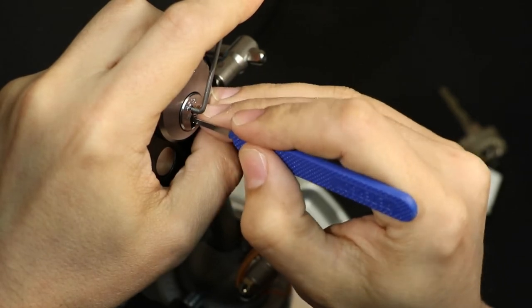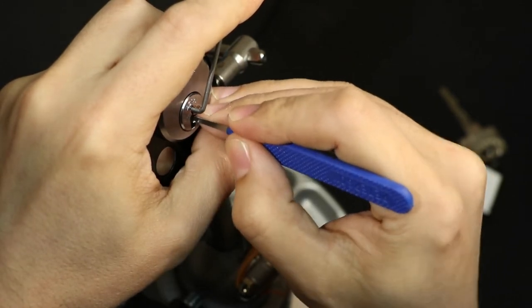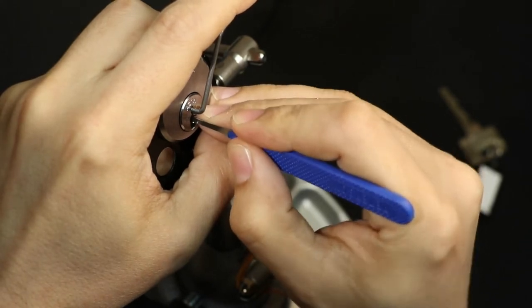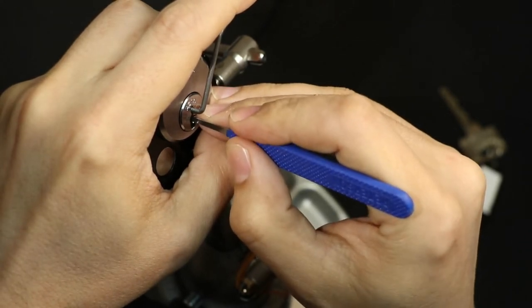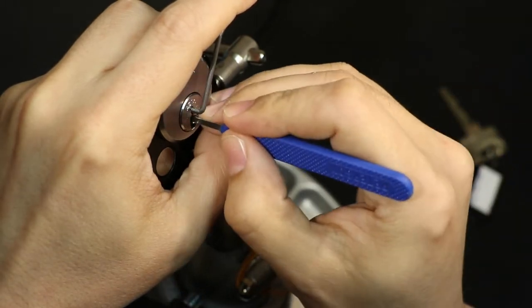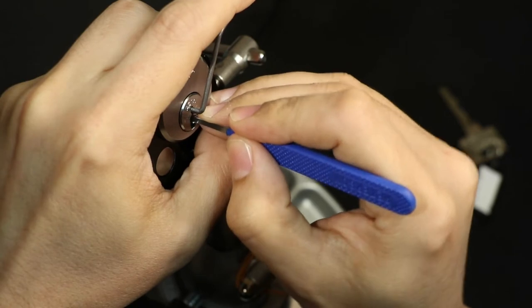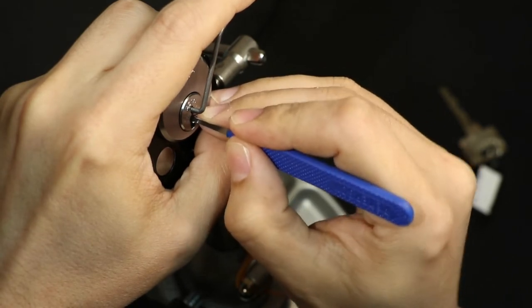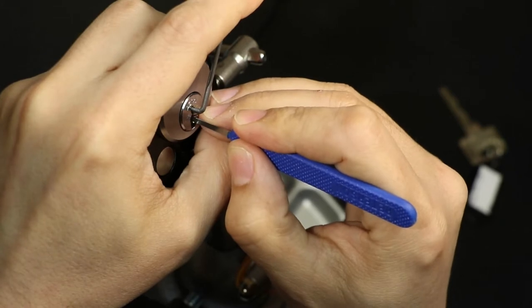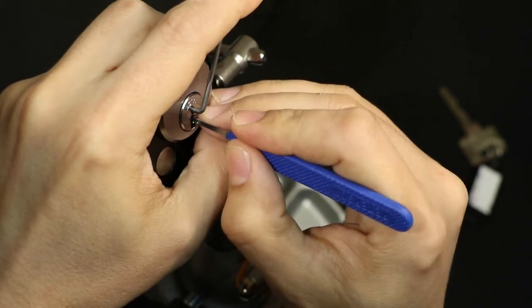And I don't know if much else about it's different. So I'm going to let off the tension a little. And while I'm bouncing the pick, I'm going to also kind of go back and forth, trying to wiggle that pin back and forth to try to get it out of the counter milling, which I just did without letting off too much tension. So I don't drop other stuff. So now six and five are both set.